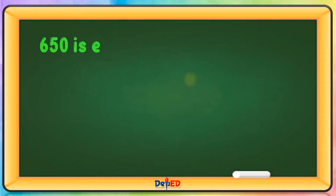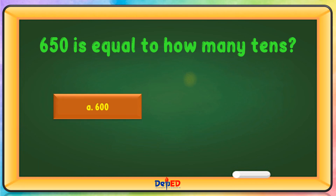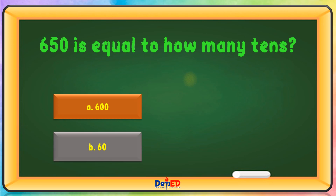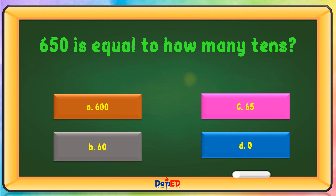650 is equal to how many tens? A. 600, B. 60, C. 65, or D. 0. The correct answer is C.